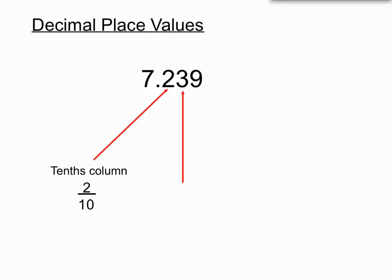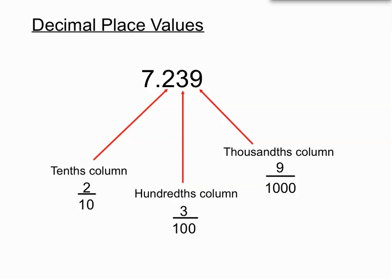The second column in the decimal is the hundredths column. So a 3 sitting in the hundredths column would be the equivalent of 3 over 100. And the third column across, that's the thousandths column. So a 9 sitting in the thousandths column would be the equivalent of 9 over 1000.